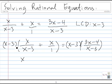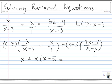Now we do x minus 3 times x divided by 1, and that's simply equal to x times x minus 3. And now we do x minus 3 times 3x minus 4 divided by x minus 3. The x minus 3 on the top cancels with the x minus 3 on the bottom, so we're left with the top, which is 3x minus 4.